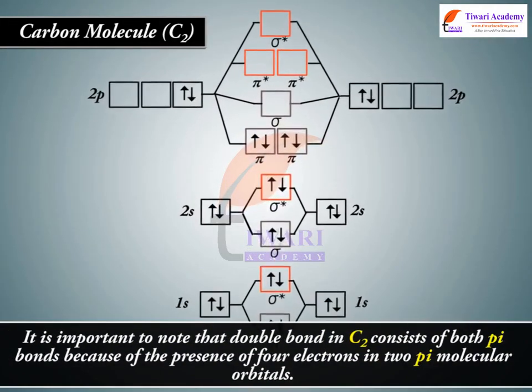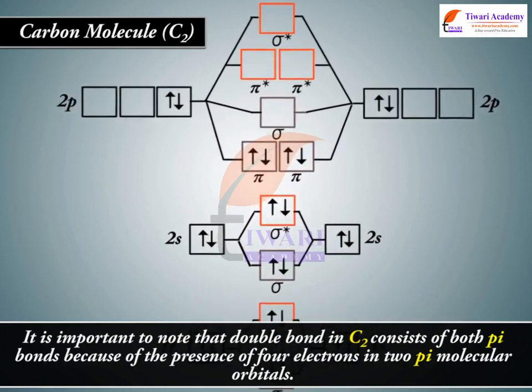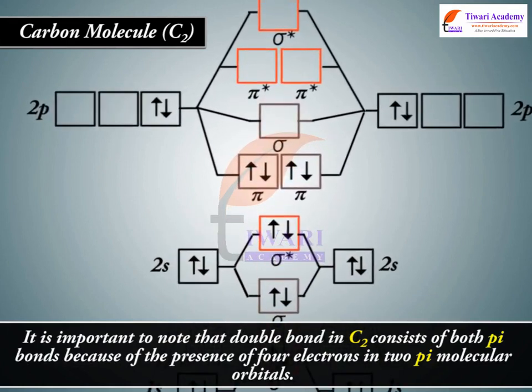It is important to note that double bond in C2 consists of both pi bonds because of the presence of 4 electrons in 2 pi molecular orbitals.